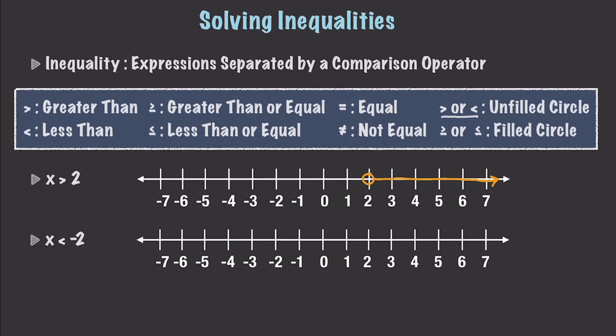In situations where we are using greater than or equal to or less than or equal to, we are once again going to find the value mentioned — so that would be negative 2. We draw a filled in circle because it is less than or equal to, and then draw a line towards x. So x is less than or equal to negative 2, going in that direction.